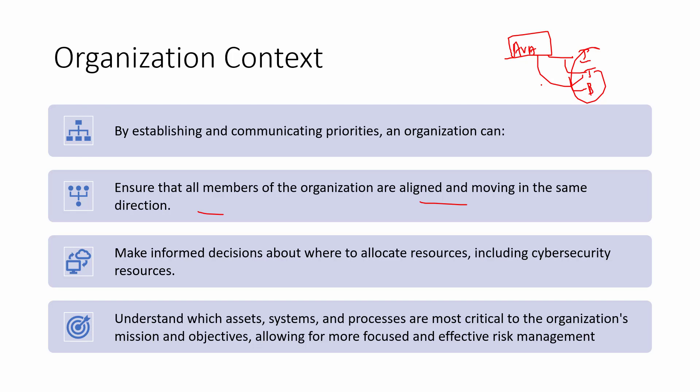According to that, load balancing, automation, and clustering become the primary priorities. We also need to understand which assets, systems, and processes are most critical to the organization's mission and objectives, which allows for more focused and effective risk management. That is why organization context is a very important thing.